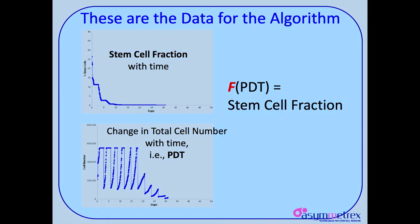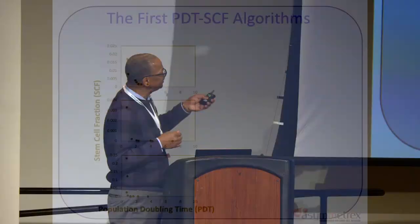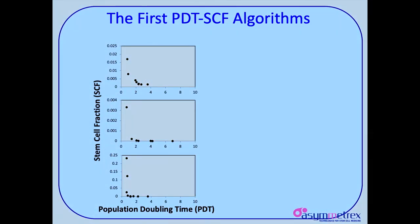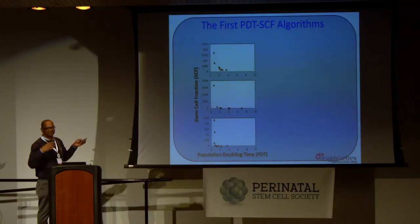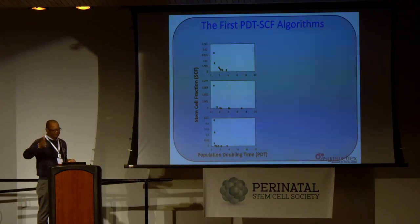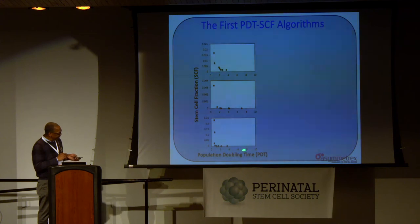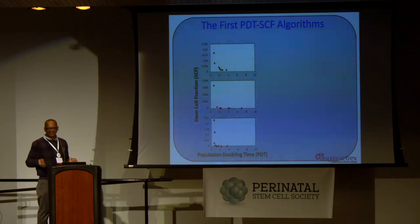So the basic idea is: relate the population doubling time, which we can calculate, to the stem cell fraction that we have found with our powerful method. We can find this function, and I'm going to show it to you now. They look like this — these are three independent studies with different tissues for stem cells. We're looking at the stem cell fraction from our computing versus the population doubling time at each interval, and they all have that characteristic look: as the doubling time increases, the stem cell fraction goes down — less stem cells, less doubling.